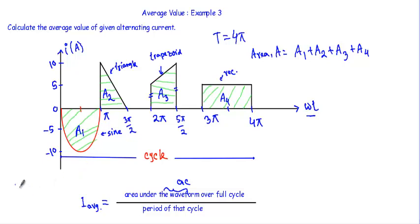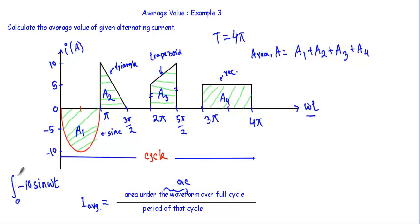From 0 to π I will encounter this sine wave, and the equation of the sine wave will be: the minimum value is −10 sin(ωt). How do we calculate the area covered by this sine wave, as indicated by the green shaded region? That will be the integration of −10 sin(ωt) between 0 to π with respect to d(ωt).